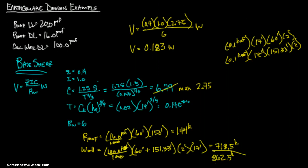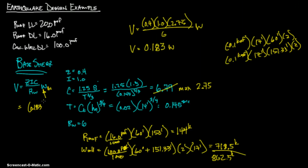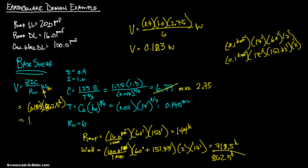That total dead load is your W. Multiplying by 0.183: 0.183 times 862.5 kips equals 157.8 kips for the base shear V. The study guide shows 157,842 pounds, which matches — we just expressed it in kips. I'll see you in part two of this video.